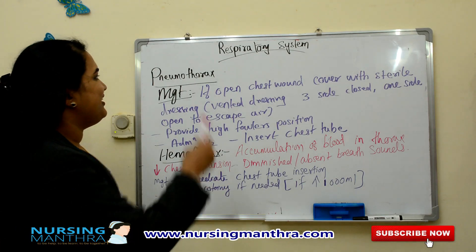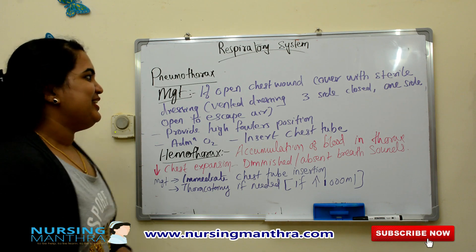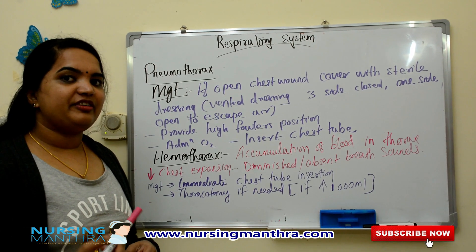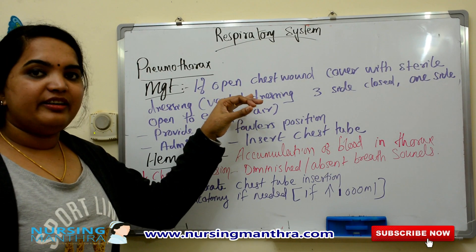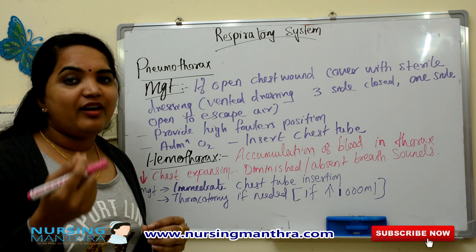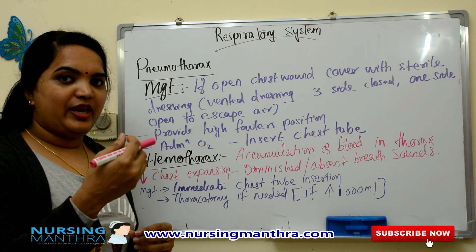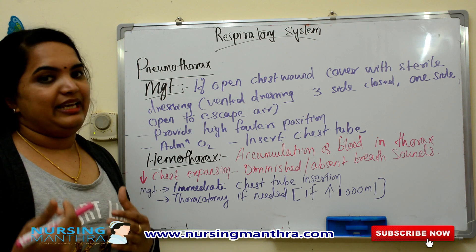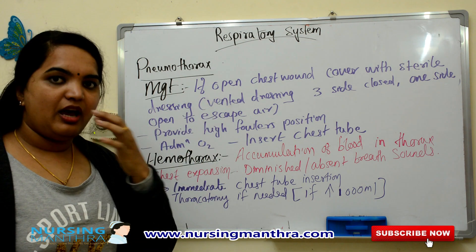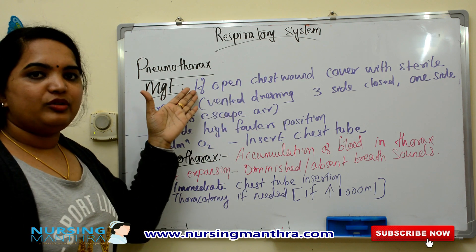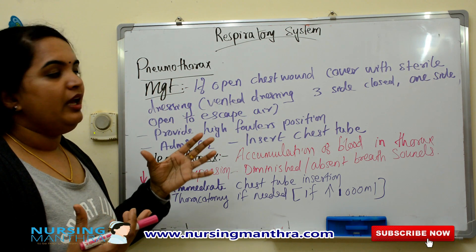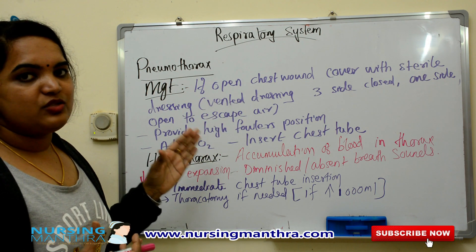For management: if there is an open chest wound, you have to cover it with a sterile vented dressing. Vented dressing means three sides are closed and one side is left open to allow air to escape. This is also a common exam question — how do you do dressing for an open chest wound? The answer is vented dressing.